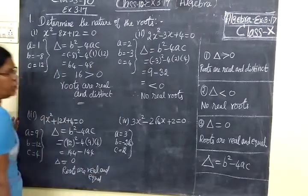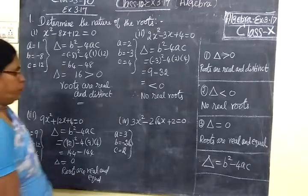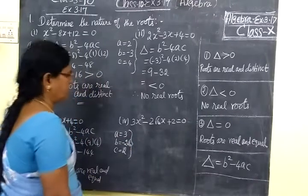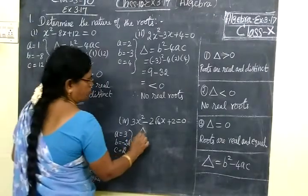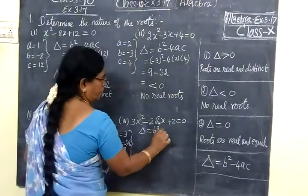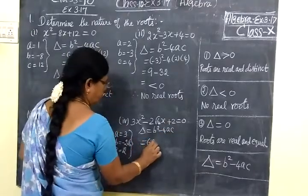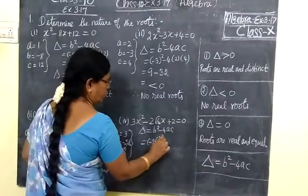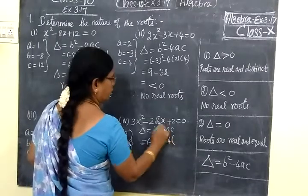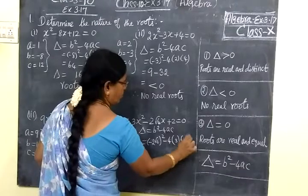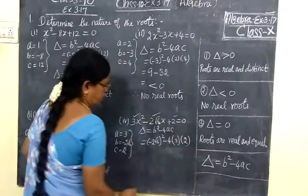Then for the fourth question, here we are writing a, b, and c values. Here also Δ = b² - 4ac. b is 2√6, so (2√6)² minus 4 into a which is 3, then c is 2.